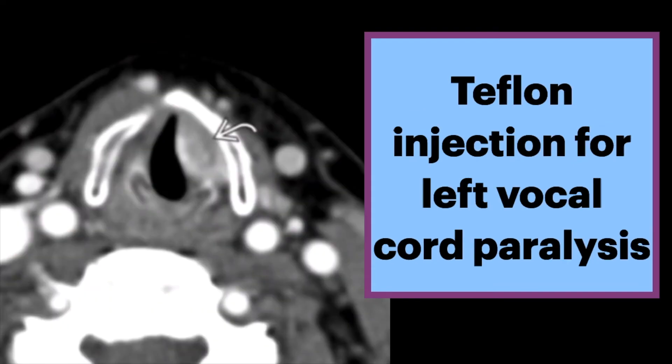There are a variety of treatments, including Teflon injection, which is shown here. This axial CT shows an amorphous high density in the left true vocal cord. Review of the history revealed a prior Teflon injection for this indication. It's critical not to mistake this for malignancy, as Teflon can cause a granulomatous reaction, resulting in a false positive PET scan.